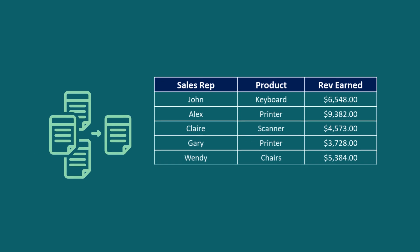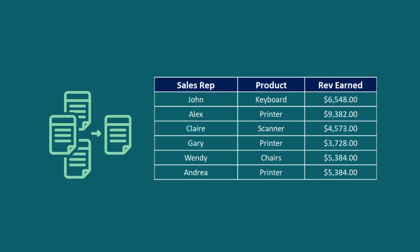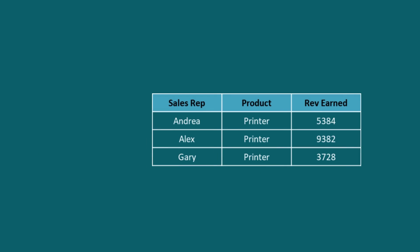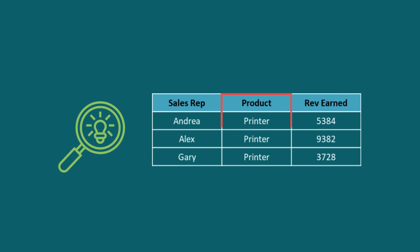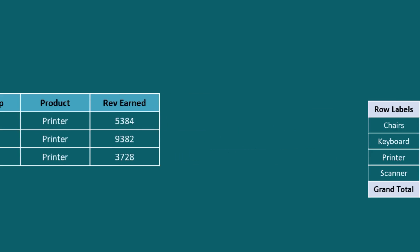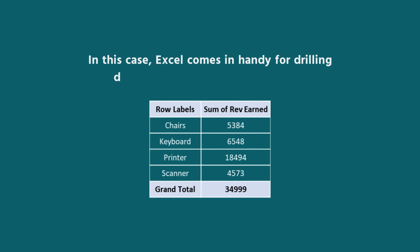While analyzing the summarized sales data of a group of products, sometimes you may need to explore the details about one single product. In this case, Excel comes in handy for drilling down on a specific part of the data.